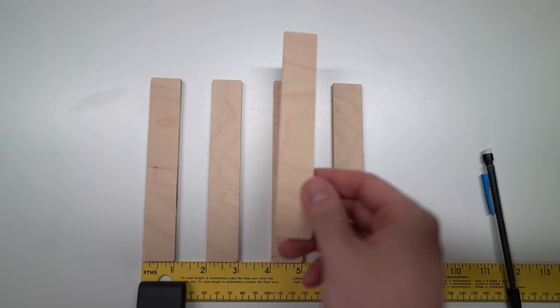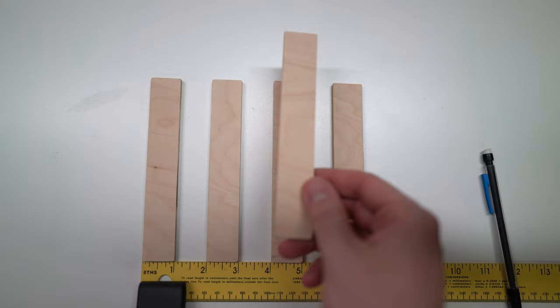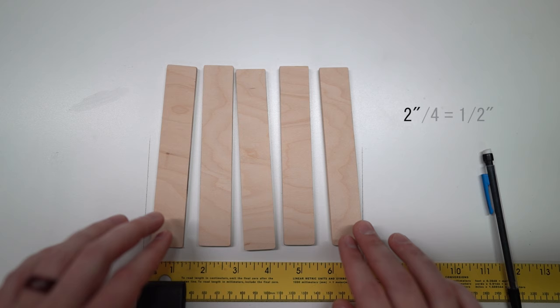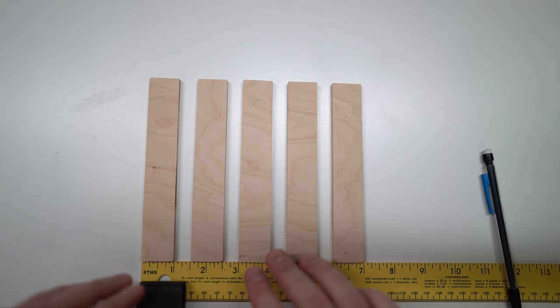But same thing goes if you wanted to complicate it a little bit more. Add a fifth style in. So same idea: seven inches minus five is two, two divided by four is half. So what we do is we line these up and we just do half inch increments. And boom. And you can tell again, perfect.